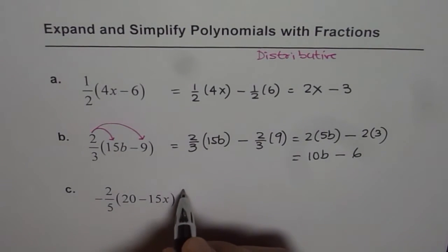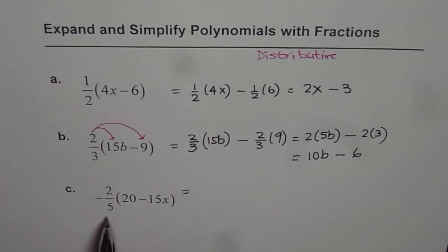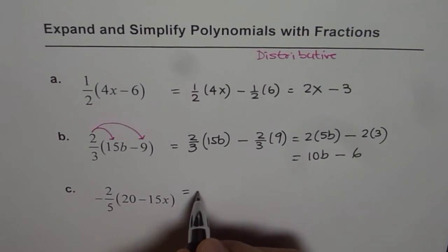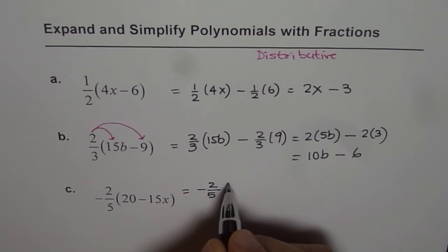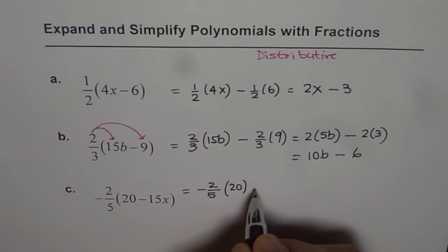Let's do the next one, part c, which is minus 2 over 5 times 20 minus 15x. So applying the distributive property, we get minus 2 over 5 times 20 minus.